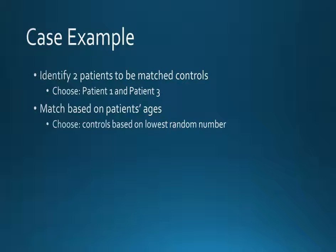We are going to identify two patients to be matched controls. We are choosing patients 1 and 3, and the next slide will clarify why. Then we are going to match based on the patient's ages, and after this, we will choose controls based on the lowest random number.